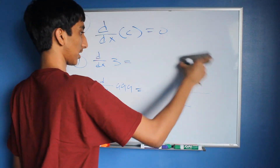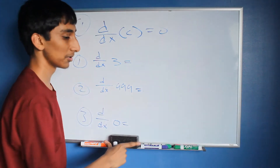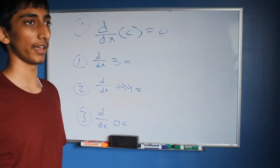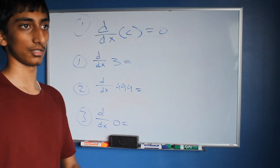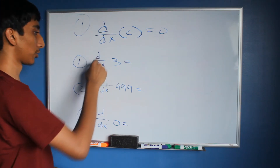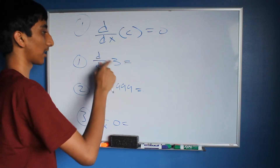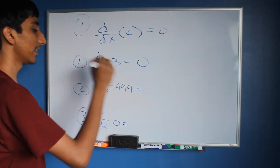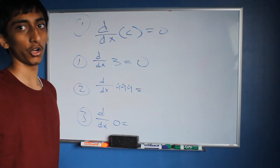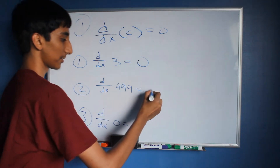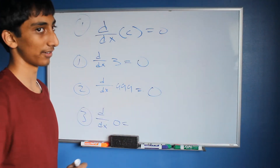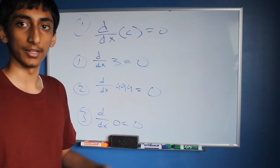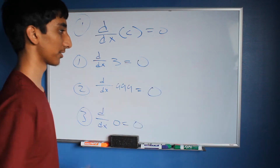Let's take a look at a few examples. The derivative of 3 — well, 3 is a constant, so it's going to be 0. The derivative of 999 — no matter how large this constant is, it's going to be 0. And the derivative of 0 is 0, because the slope of the tangent line will always be 0 for a horizontal line.